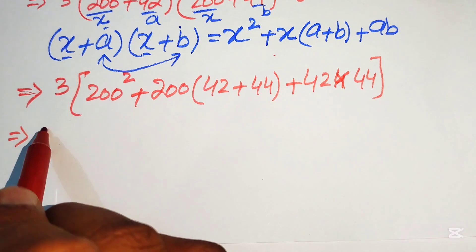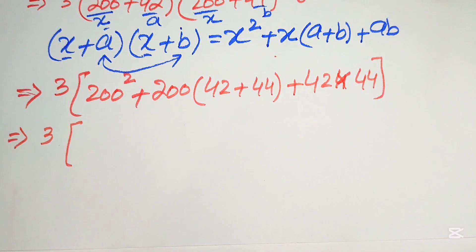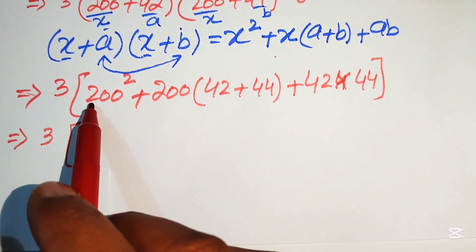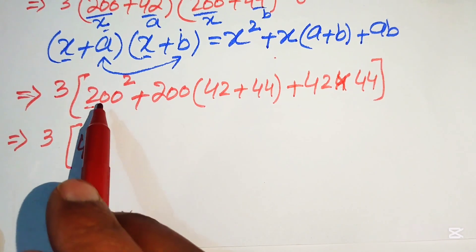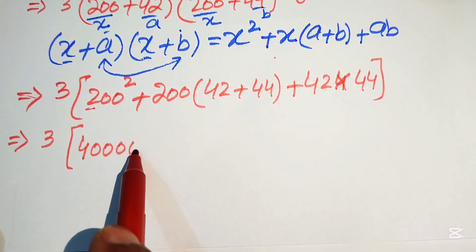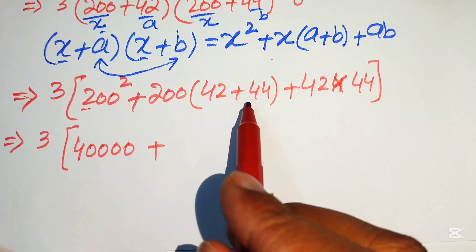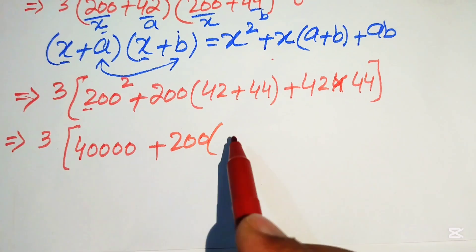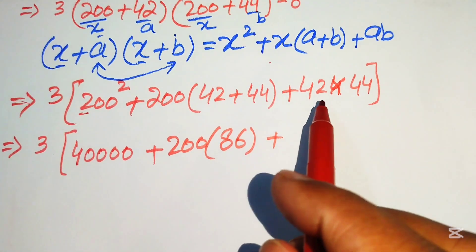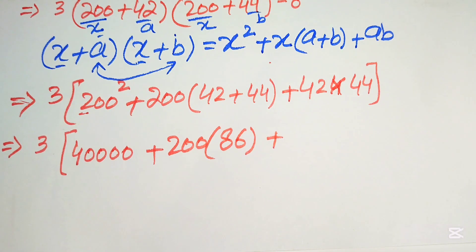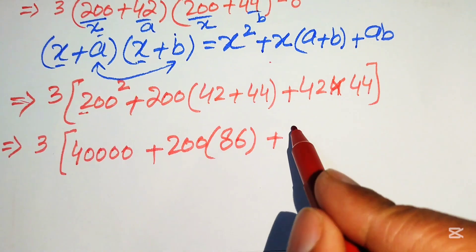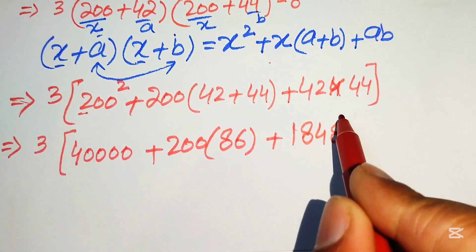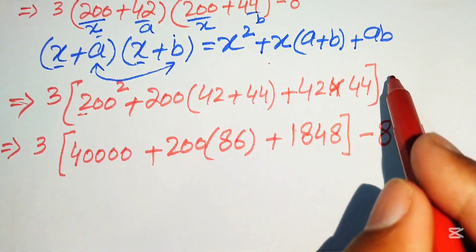To find 200 squared, we square 2 to get 4 and add four zeros, giving 40,000. Then 42 plus 44 equals 86. Multiplying 42 times 44 by the traditional method gives 1848. So we have 3 times 40,000 plus 200 times 86 plus 1848 minus 8.